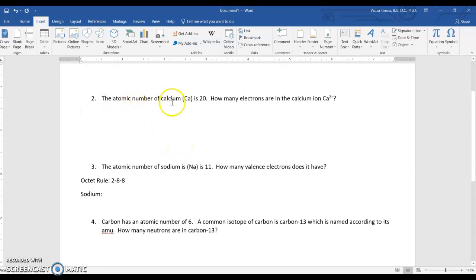Number two says the atomic number of calcium is 20. So what do you know? Well, the number of protons, right off the bat, it gives you the atomic number, so we know there's 20 protons. Then it says, how many electrons are in the calcium ion?